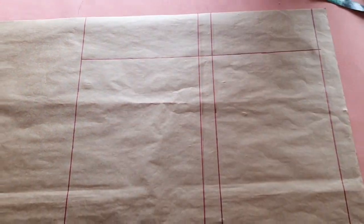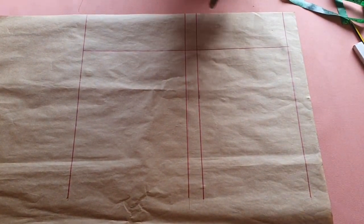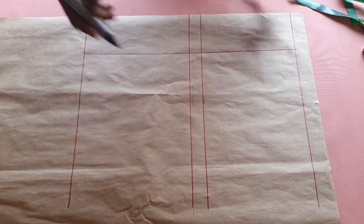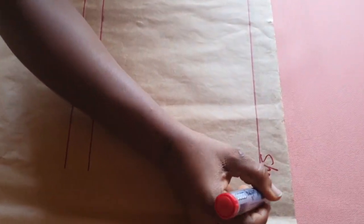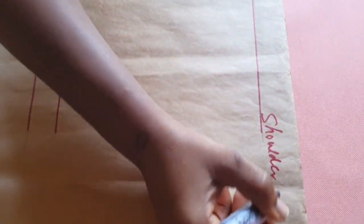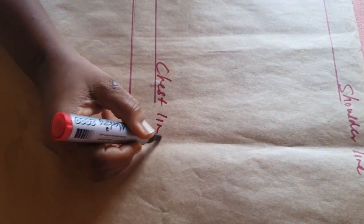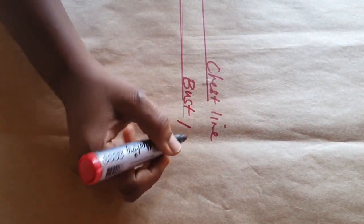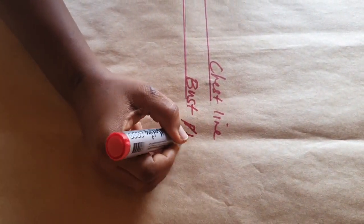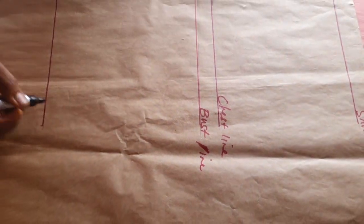Now for our horizontal measurements, let me label first. This is our shoulder line, this is our chest line, this is the bust line, and this is the waist line.